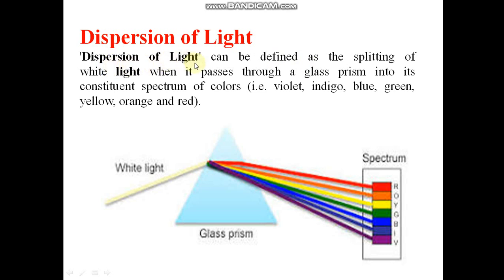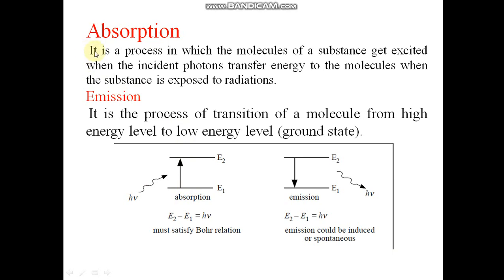Dispersion of light. Dispersion of light can be defined as splitting of white light when it passes through a glass prism into its constituent spectrum of color.